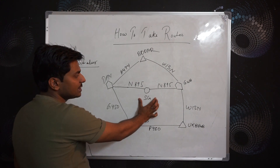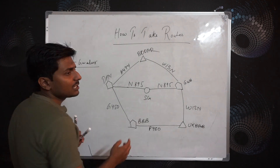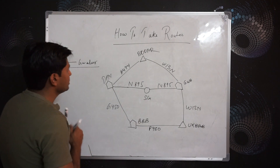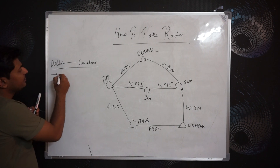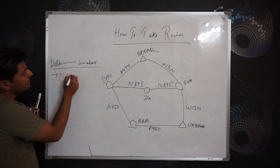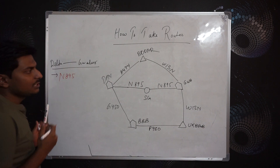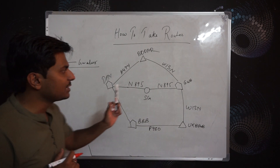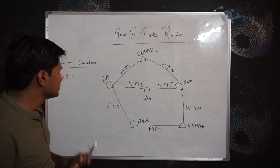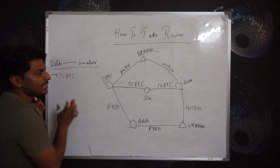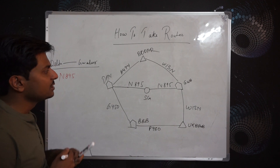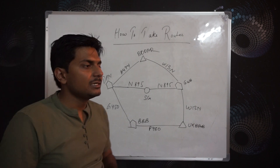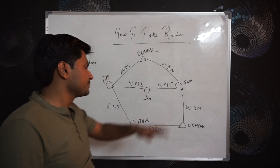One route that is very easy is the straight line: November 895. November 895 means I go up to Sierra Golf first, and then continue by the same route. So I can simply take November 895. If I'm going from Delhi to Gwalior and I write November 895 in the route section, that is sufficient to tell ATC which route I'm taking.